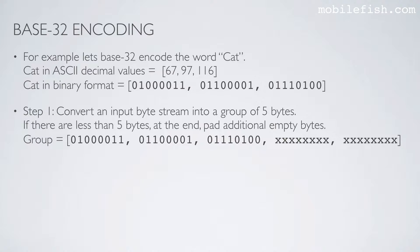Step 1: Convert an input byte stream into a group of 5 bytes. If there are less than 5 bytes at the end, pad additional empty bytes. Each byte corresponds to the visual representation shown. We need a group of 5 bytes, so we need to add 2 additional empty bytes.